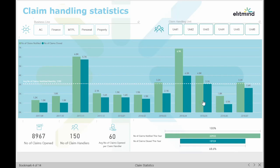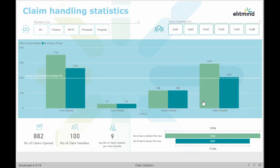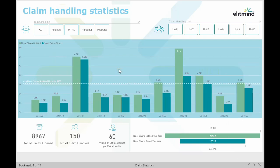The report also shows some very interesting numbers like the total number of claims currently open, the number of claim handlers, and workload per one claim handler. If we select one of the months we can see how these statistics change.